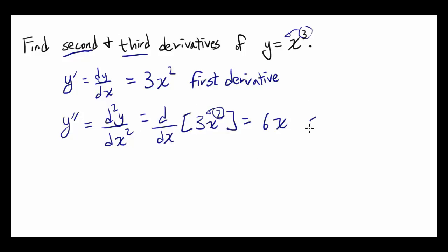So that's the second derivative, because you're differentiating the original function twice to get to y double prime.